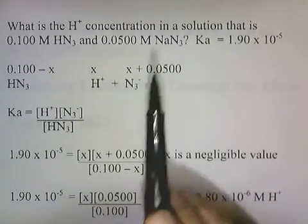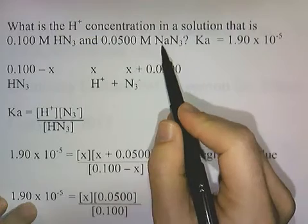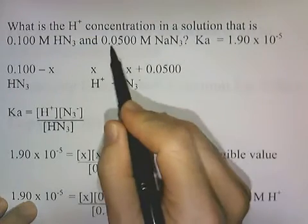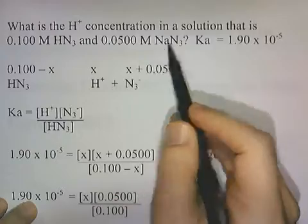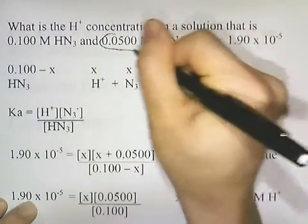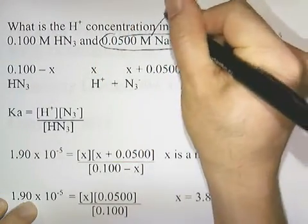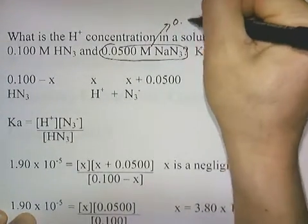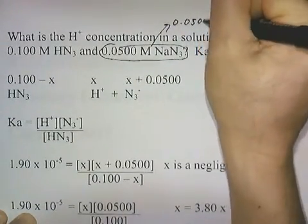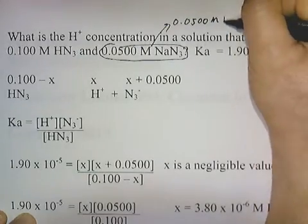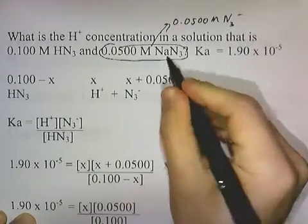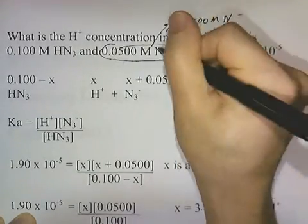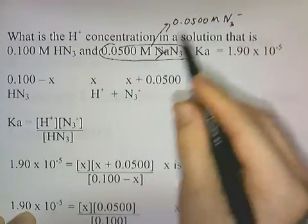We're going to ignore the Na in NaN3 and assume that 0.05 molar NaN3 means the same thing as 0.05 molar of just N3-. The sodium is the spectator ion that we can ignore.